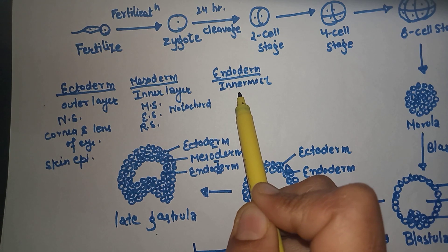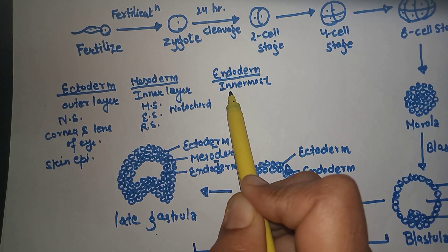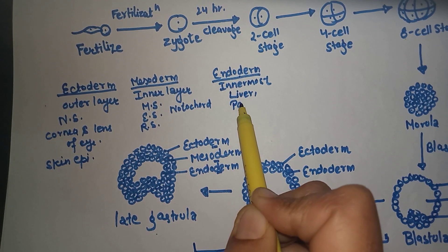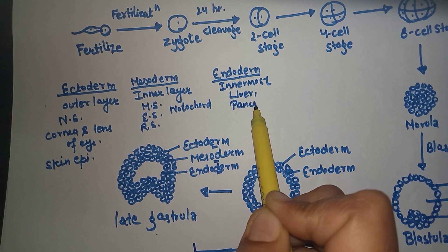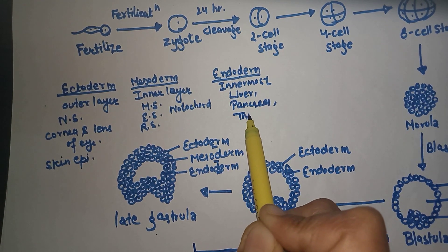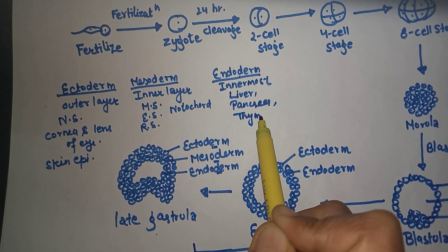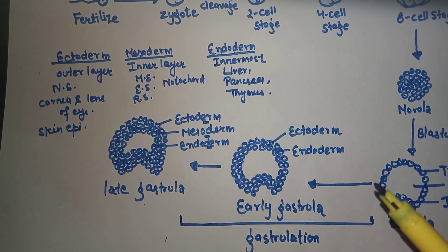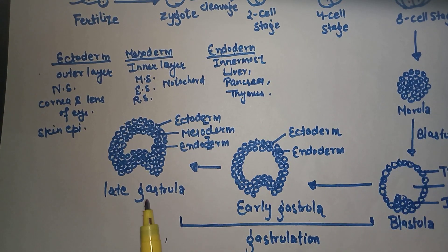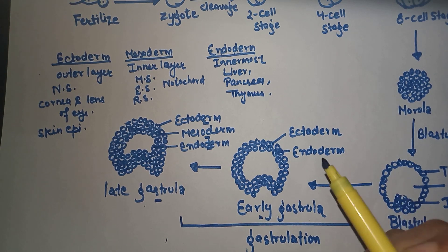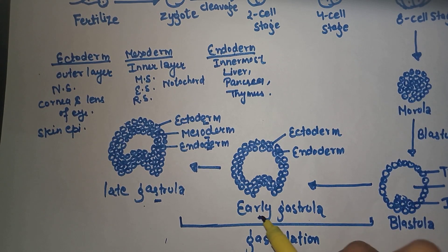Endoderm is the most innermost layer — mesoderm is the middle and endoderm is the innermost. It develops most of the organs in our body, for example the liver, pancreas, and thymus.